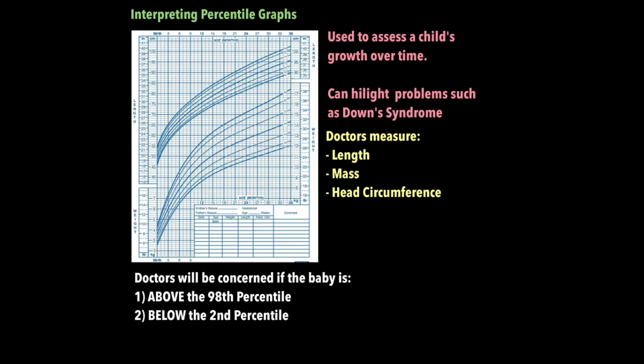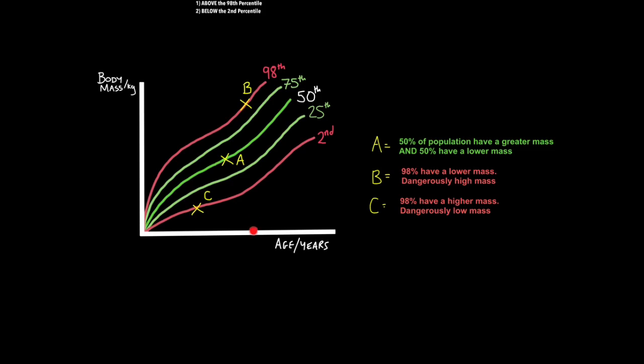Doctors will be concerned if a baby is above the 98th percentile or below the second percentile. Let's look at that. So let's say this is my age here and this is my body mass and that puts me on the 98th percentile. What that means is for my age, 98% of the population who are my age will be less heavy than I am and only 2% will be heavier. In other words, I'm extremely large for my age. I could have a dangerously high mass. So on the 98th percentile, 98% of the population have a lower mass so I must have a dangerously high mass.